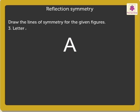Figure 3: Letter A. We can divide the letter into two equal halves by folding it vertically. Thus, we say letter A has one line of symmetry.